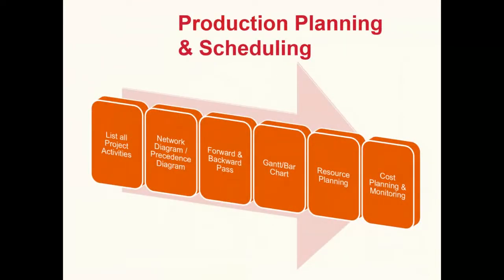Starting with the basic activities at the beginning of a project: listing all key project activities, then developing network diagrams or precedence diagrams to identify logical relationships between different activities and their precedence relationships. Once that is done, we do a forward pass and a backward pass. The forward pass helps calculate early start times and the backward pass calculates late start times — critical information when planning resources, especially in constrained environments.